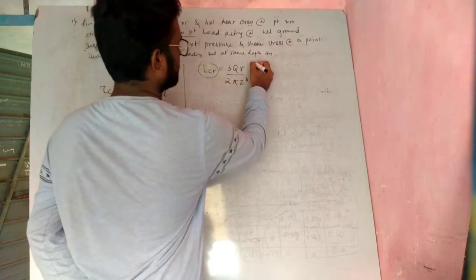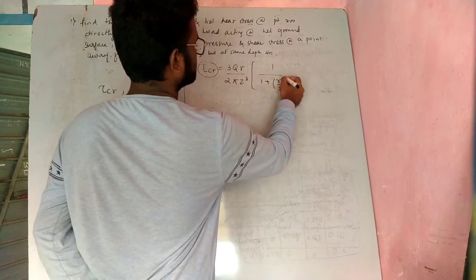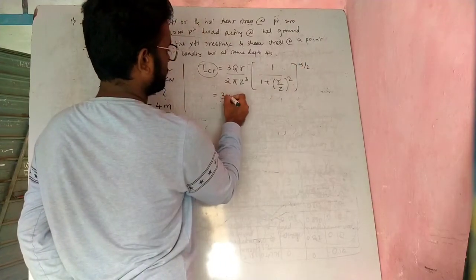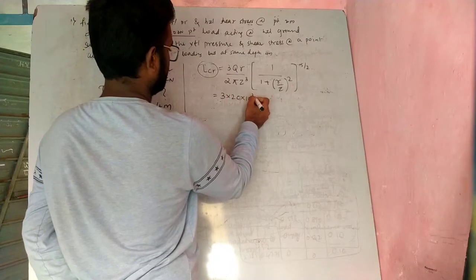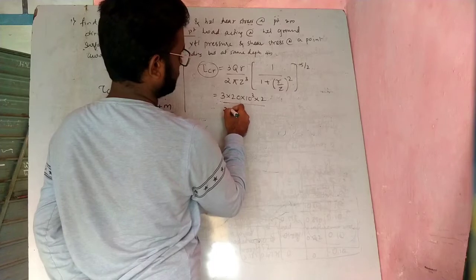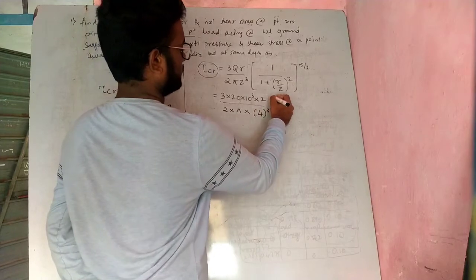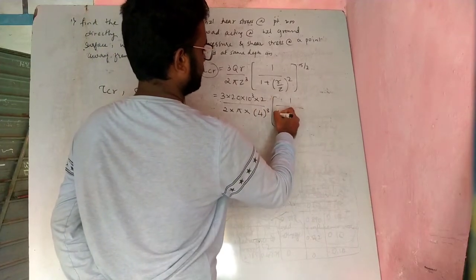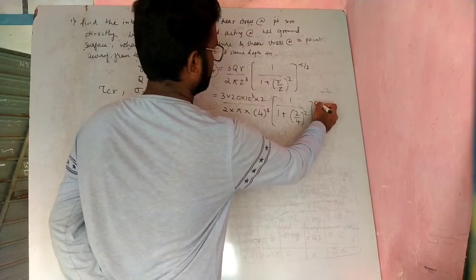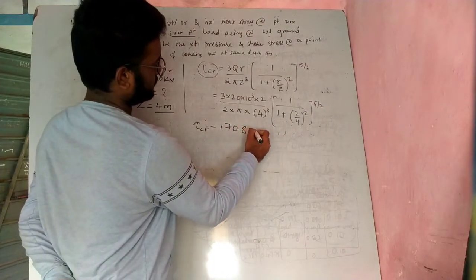For the shear stress τ, the formula is 3qr divided by 2π z³ multiplied by 1 divided by (1 plus (r/z)²) to the power 5/2. Substituting q=20 kN, r=2m, z=4m gives τ equal to 170.82 N/m².